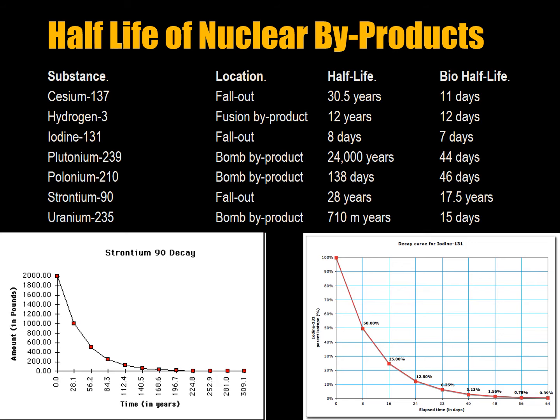The bio-half-life of cesium is 11 days — the body takes in non-radioactive cesium as a nutrient, uses it, and excretes it. Hydrogen-3, which is tritium, is a fusion byproduct with a half-life of 12 years and a bio-half-life of 12 days. It's basically: you drink water, and then you urinate.